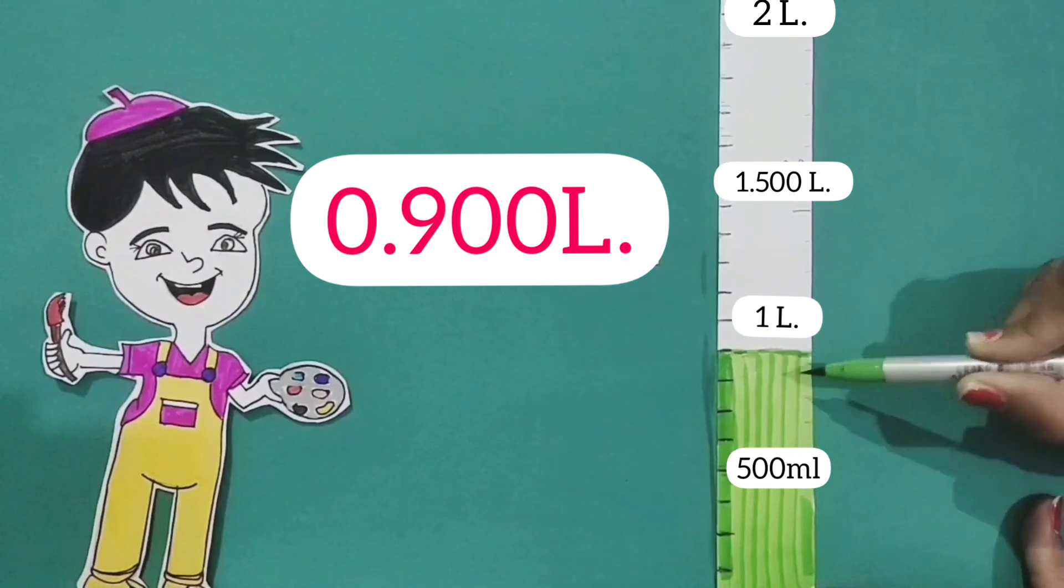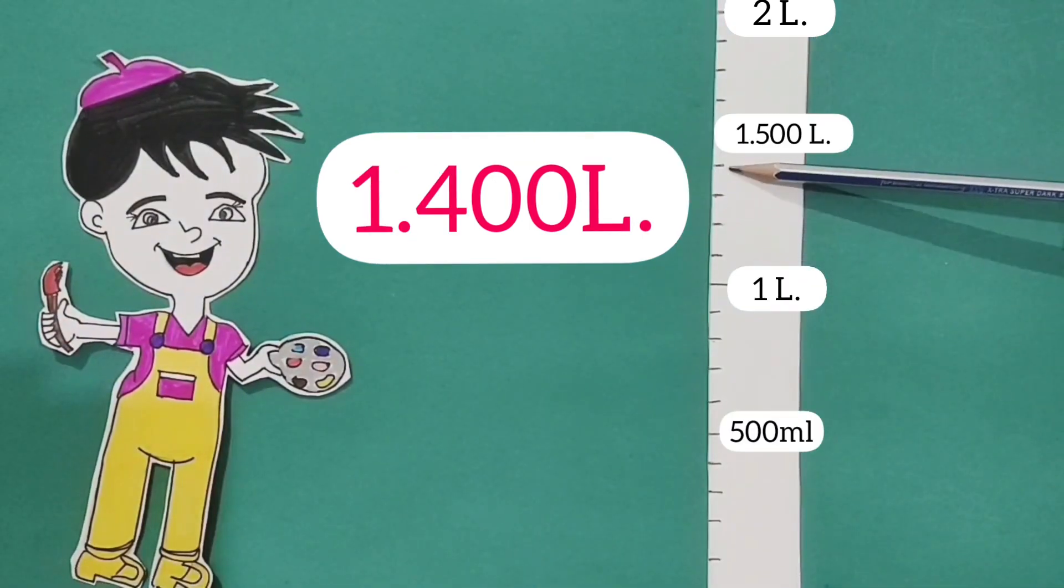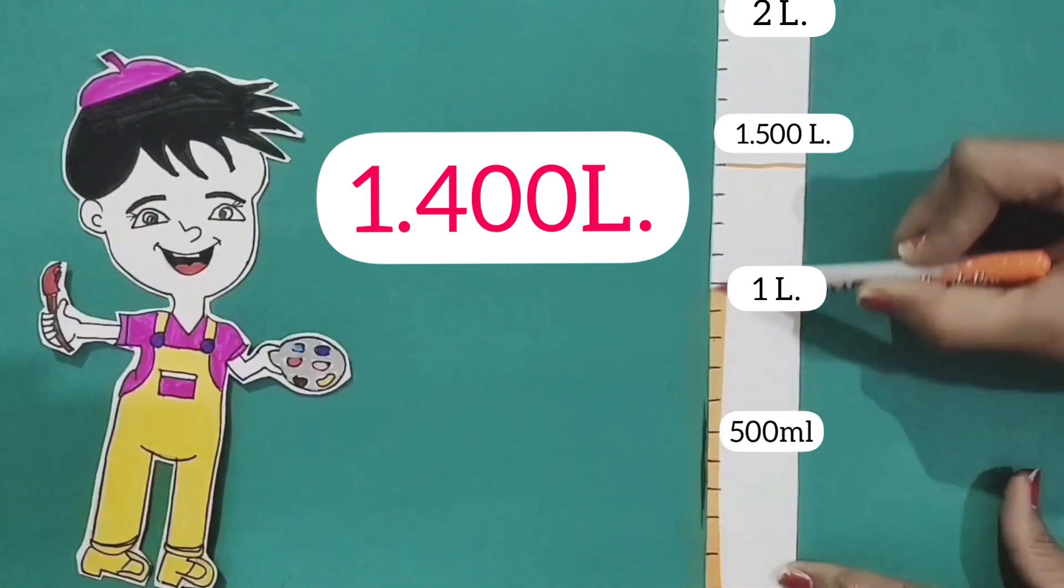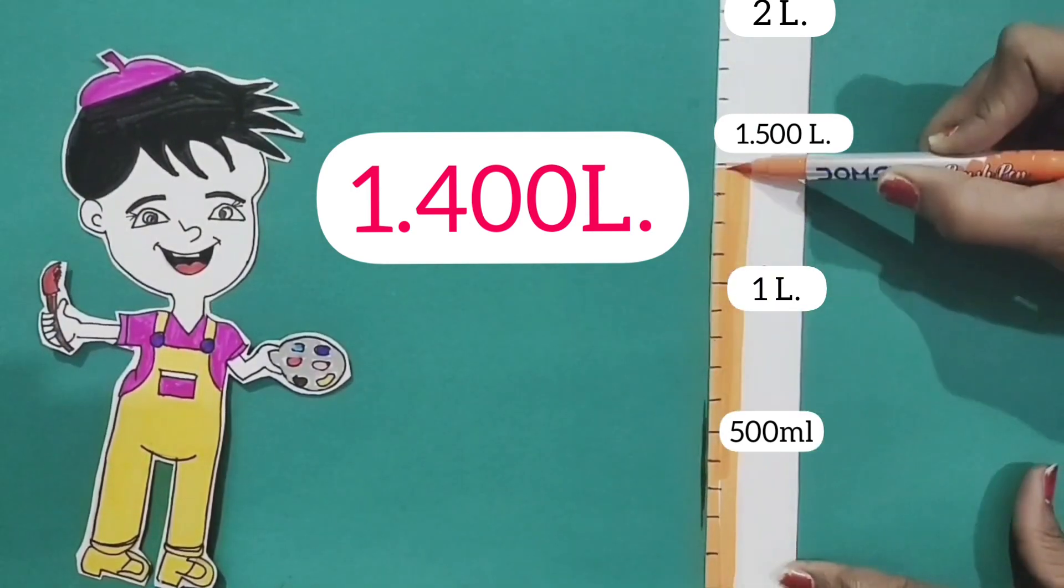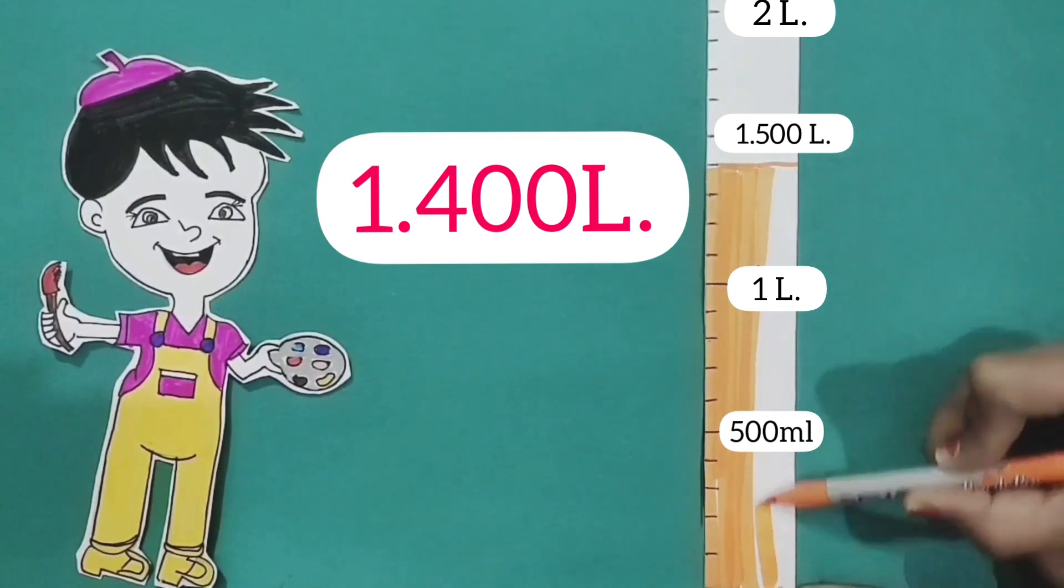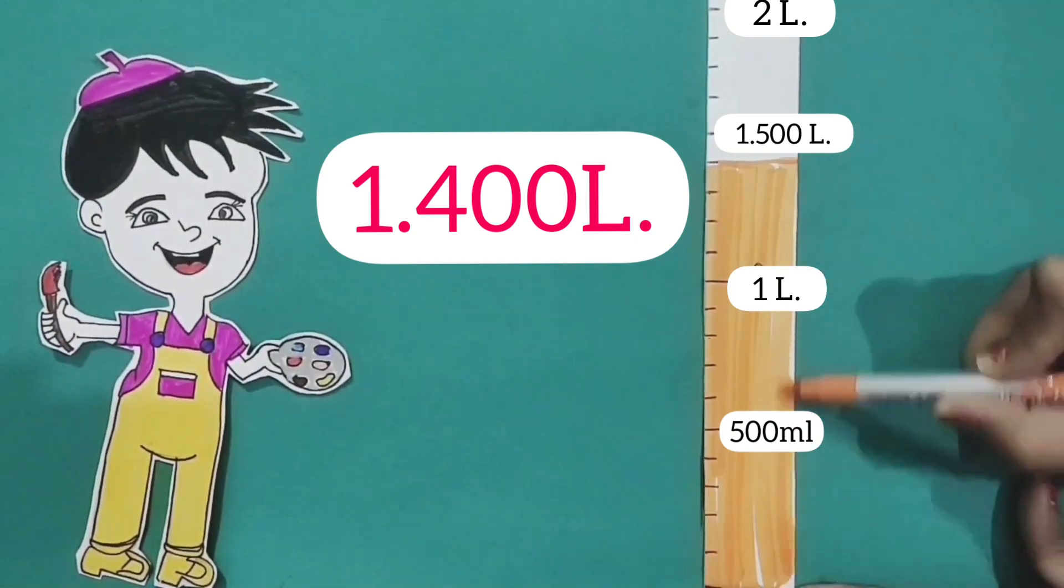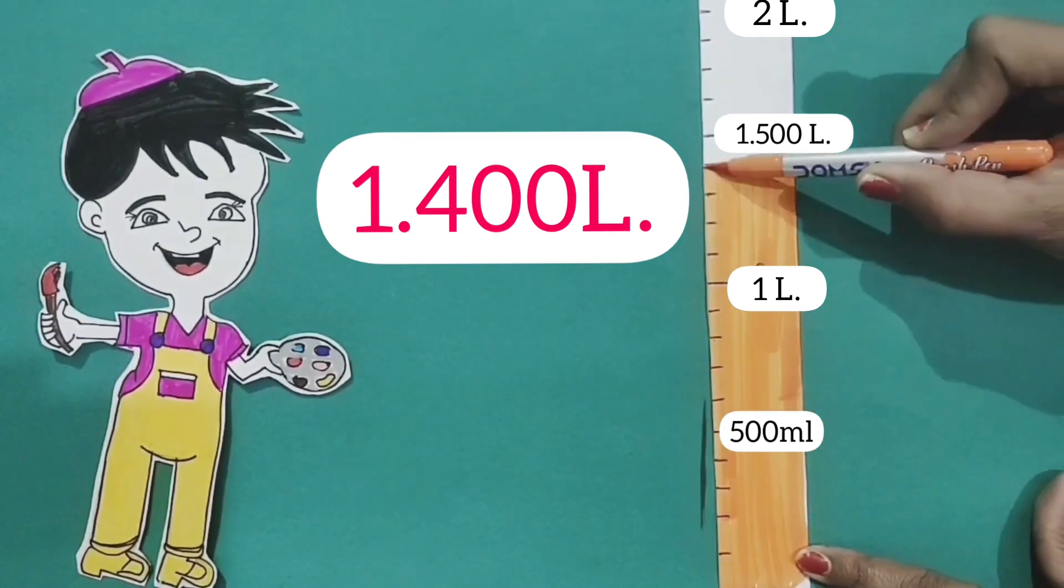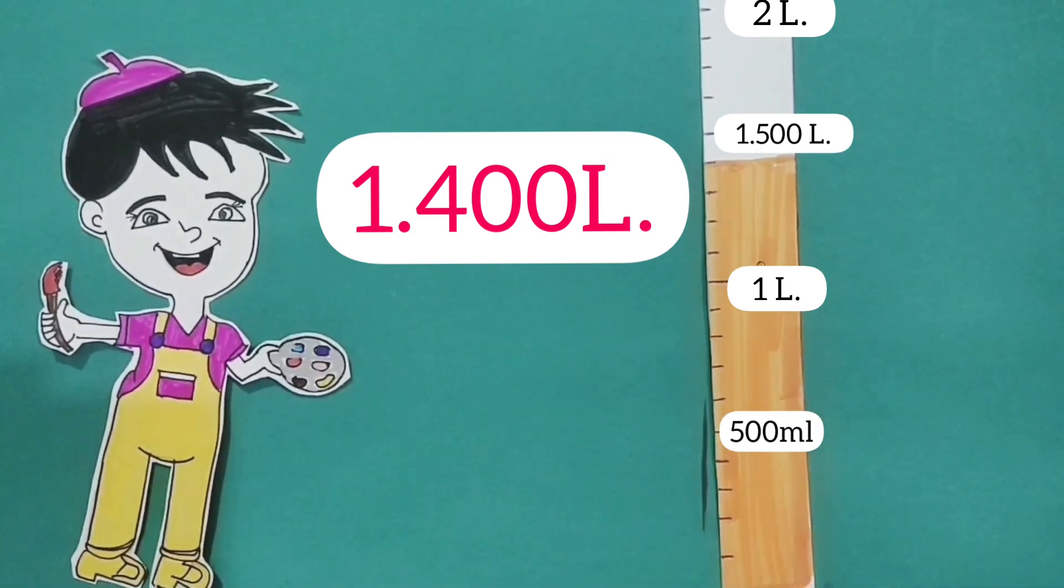Now, the next scale to color is up to 1.400 liter. See, first, we marked an indicator line up to 1.400. For that, we counted 4 subdivisions after 1 liter. And now, we'll fill the colors up to 1 liter, 400 milliliters. So, in this way, we colored all the scales for the given amounts.